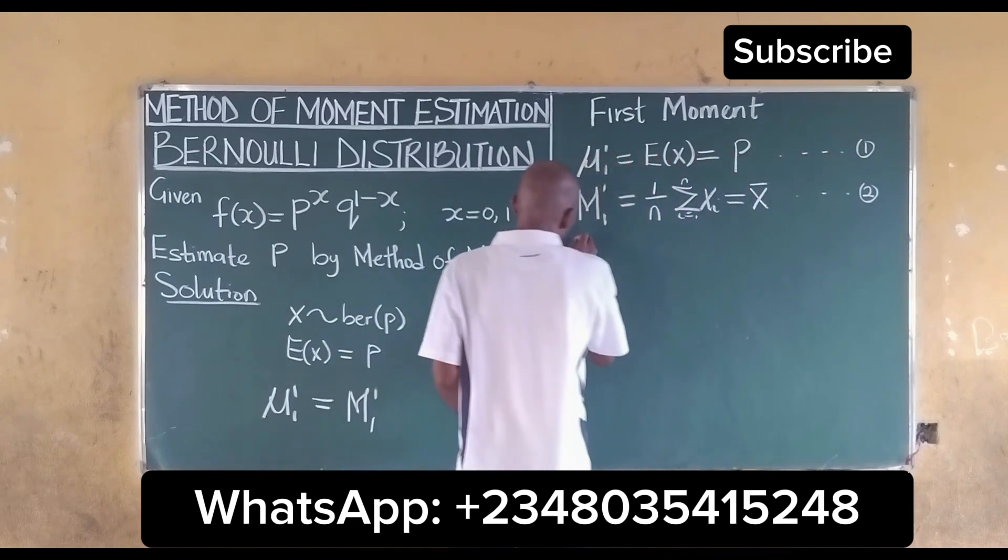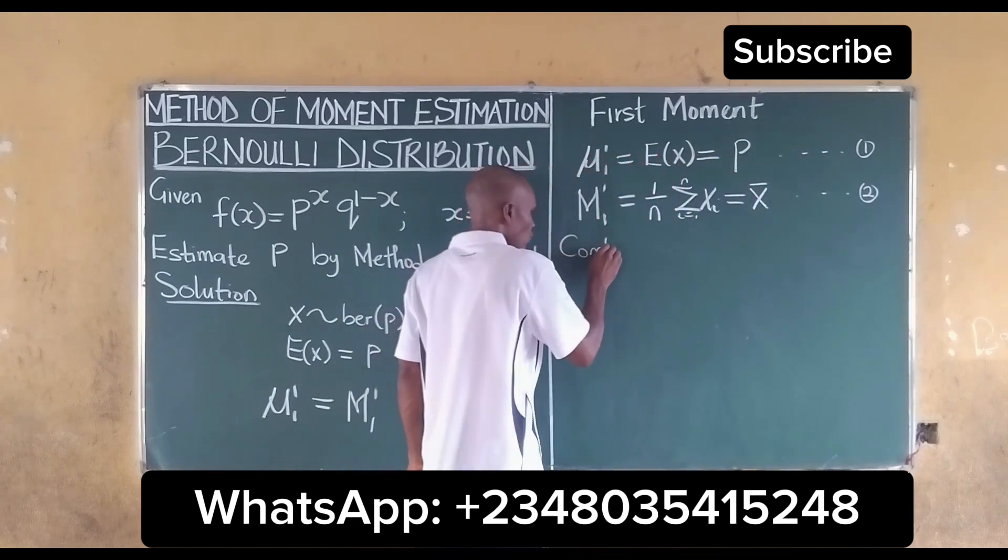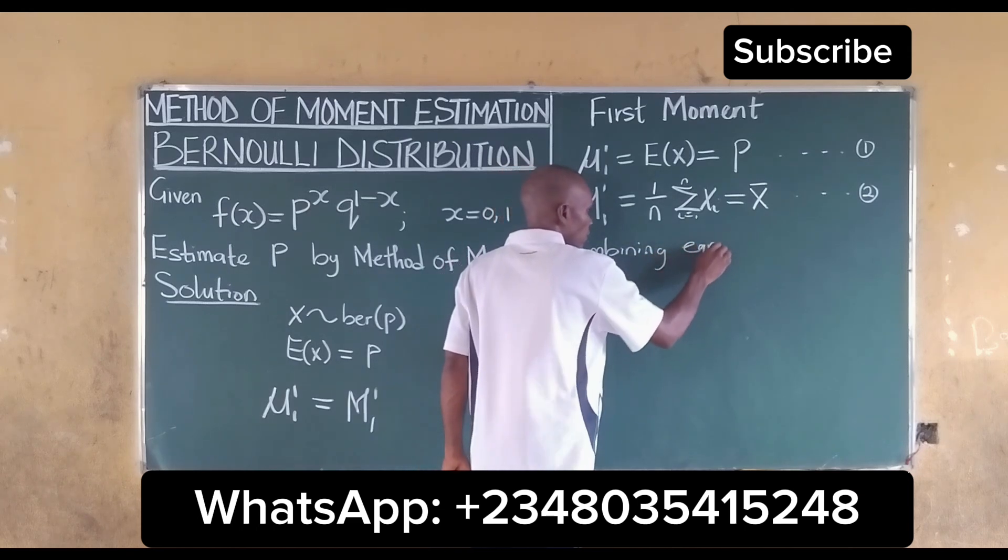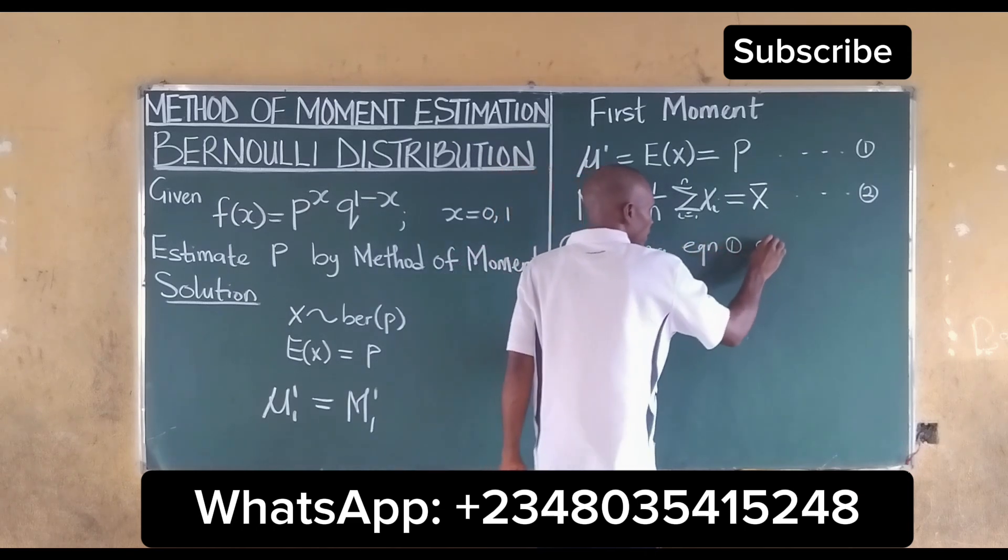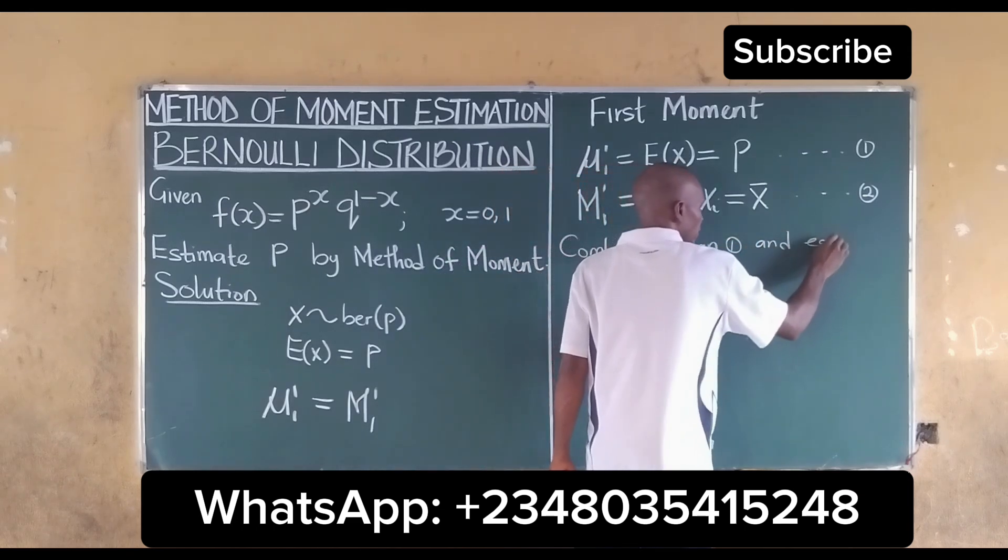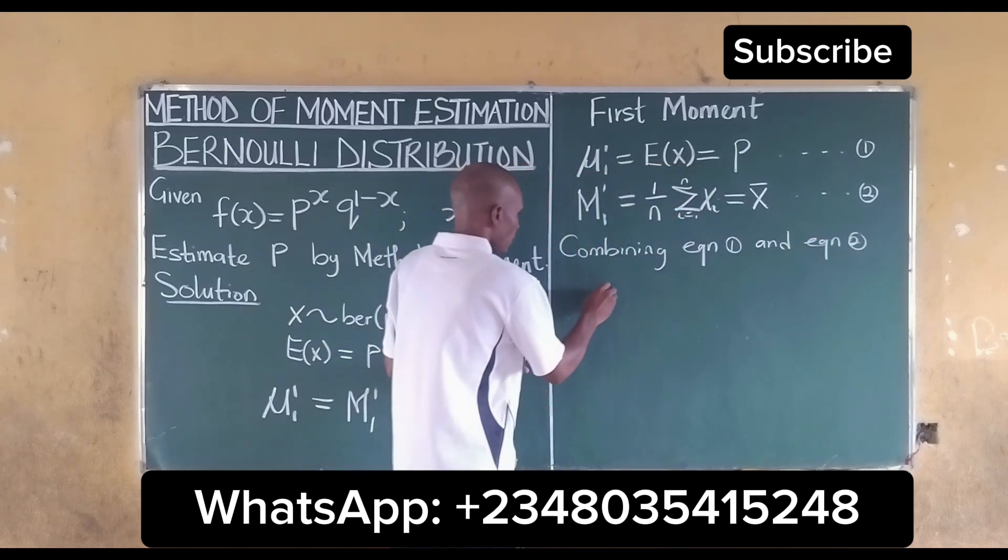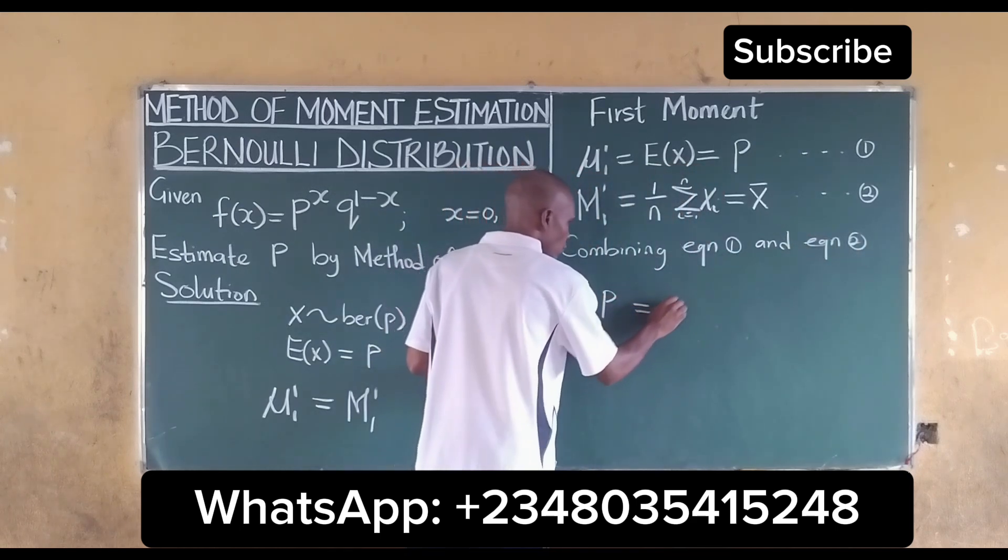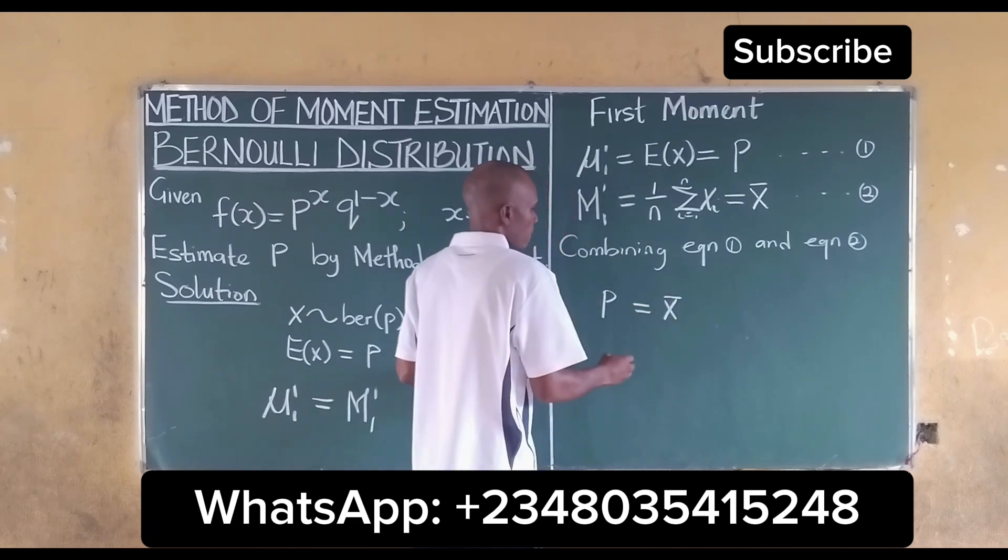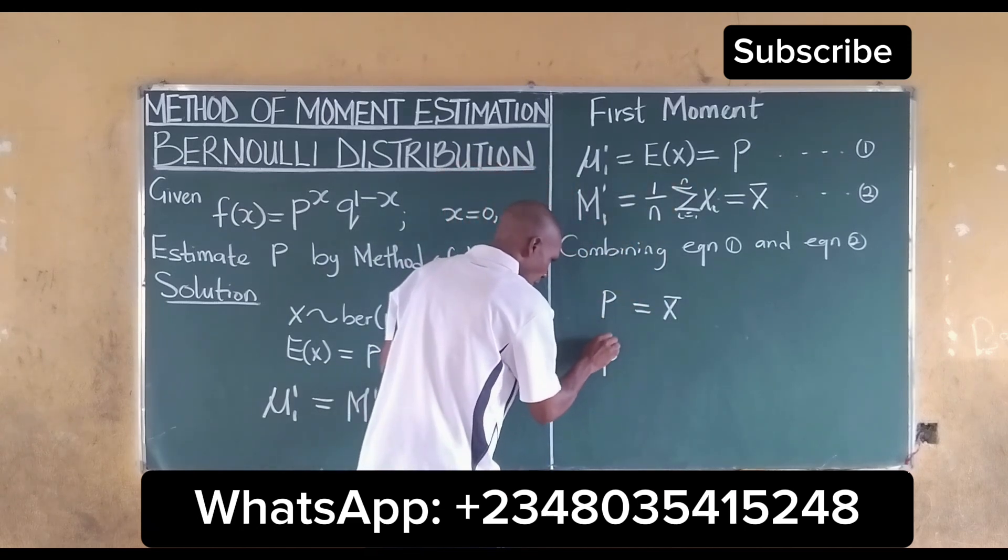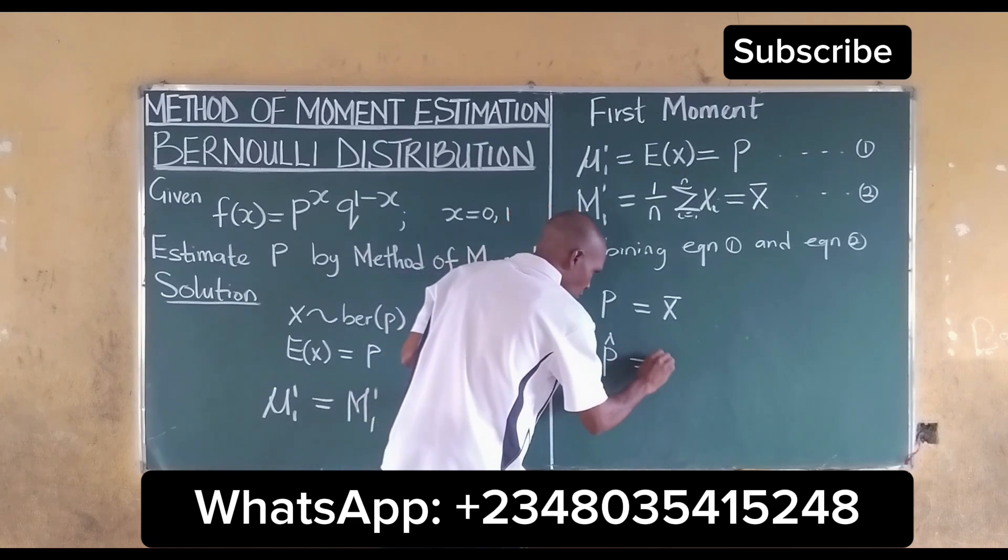So combining equation 1 and 2, combining equation 1 and equation 2, we have that p is equal to X bar. It then means that our p estimate is equal to X bar, meaning p is unbiased for this.